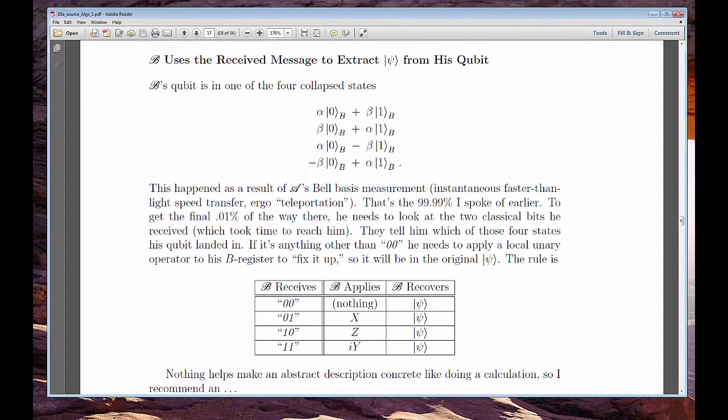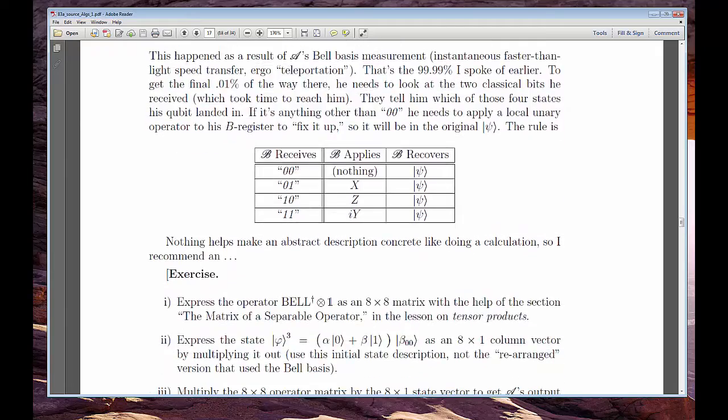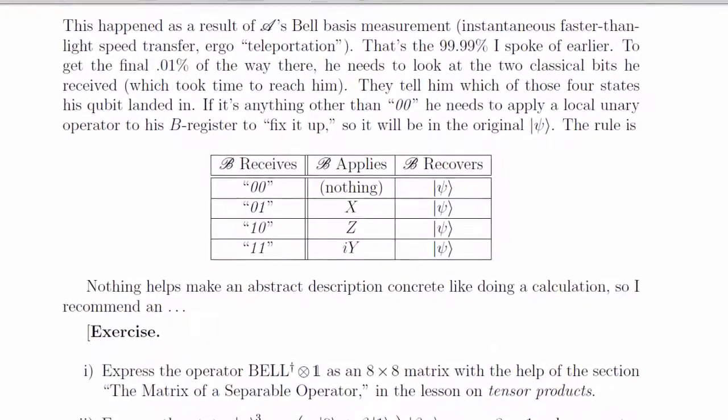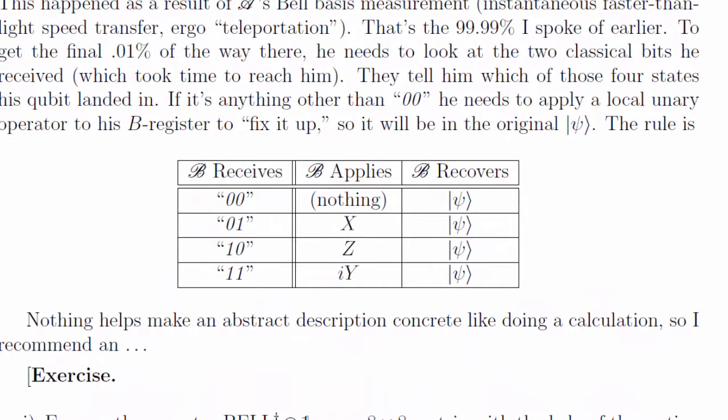Alice then sends her two classical bits to Bob, who uses them to decide how to process his half of the entangled Bell pair. After he does what the message instructs him to do, Bob's done. He has the original qubit, Ketsai, in its full glory.